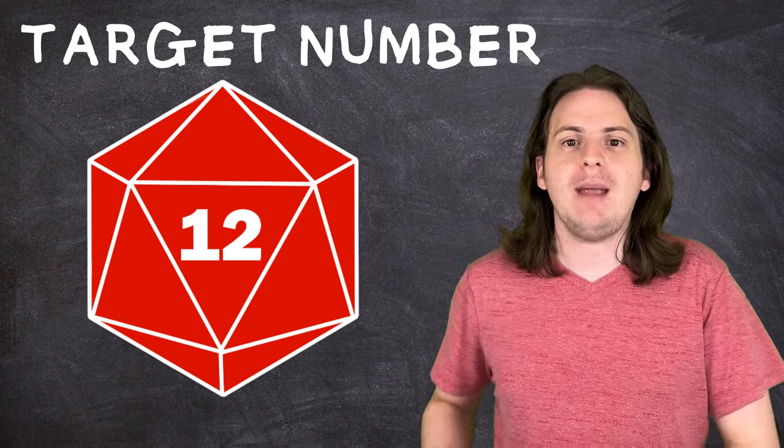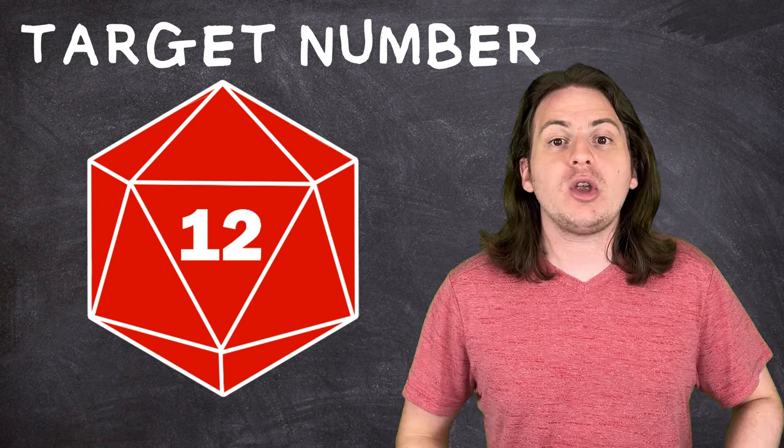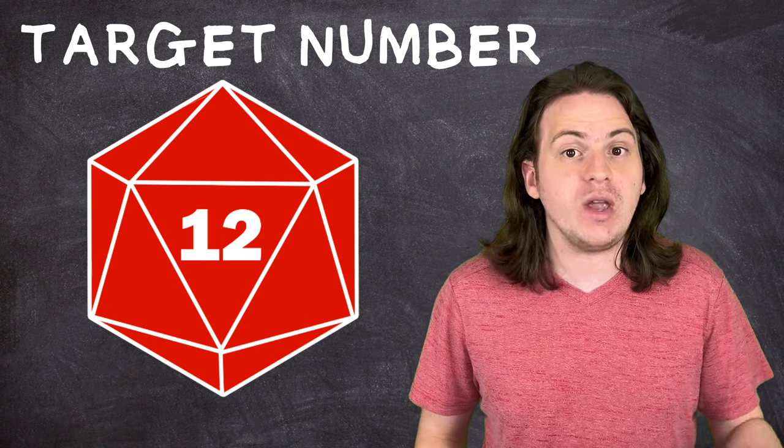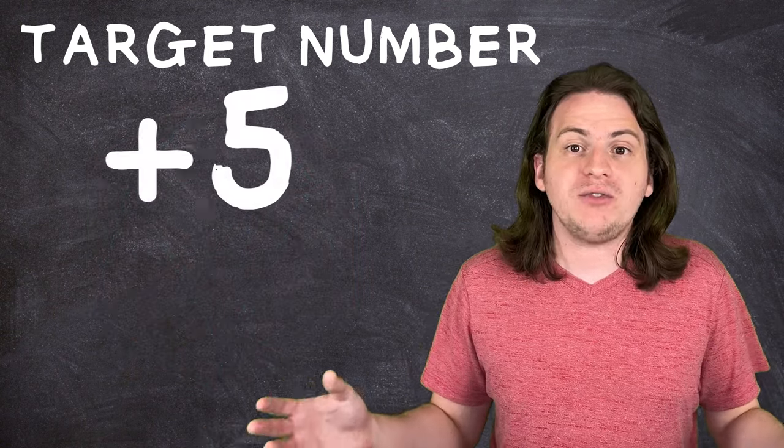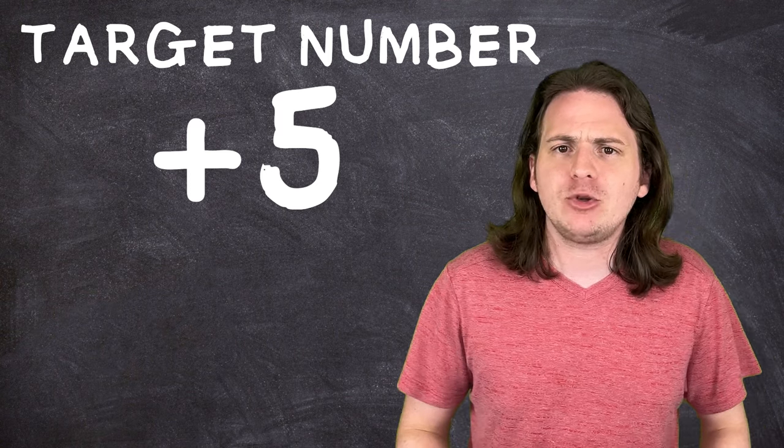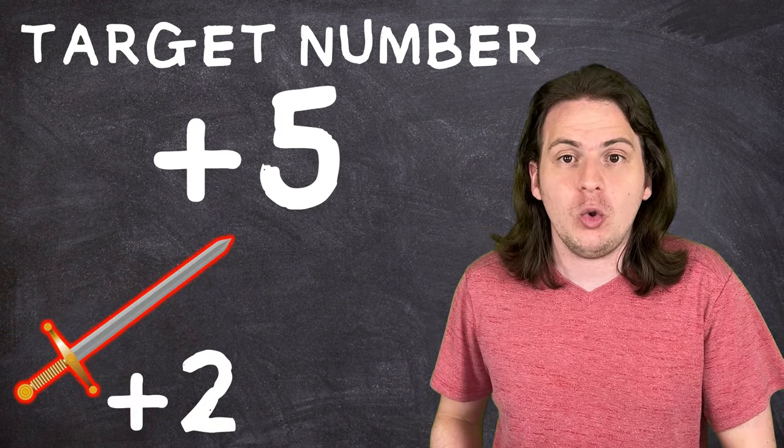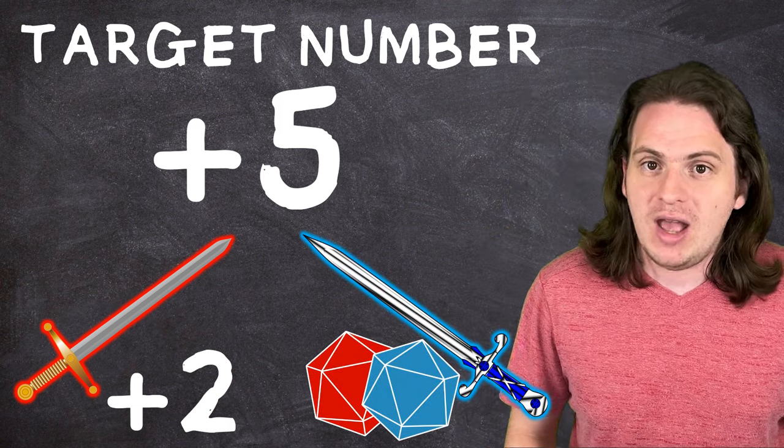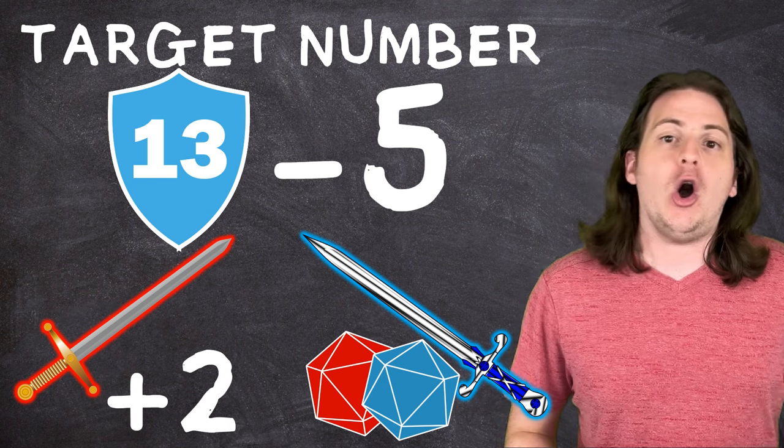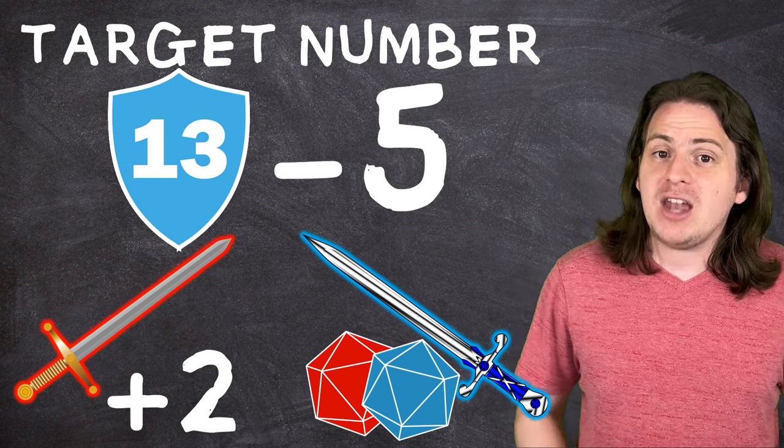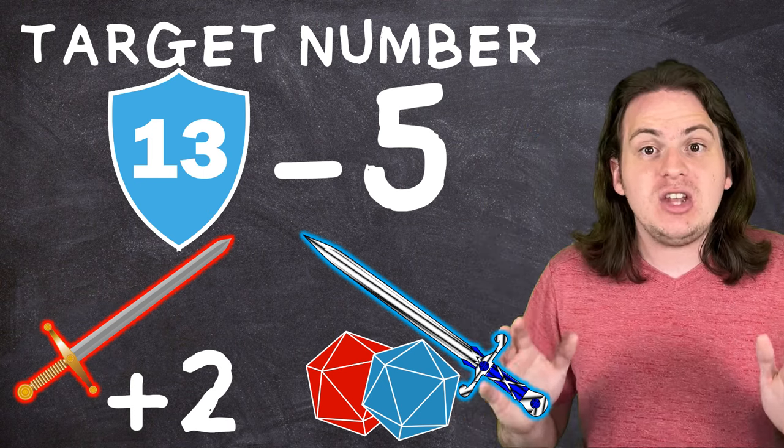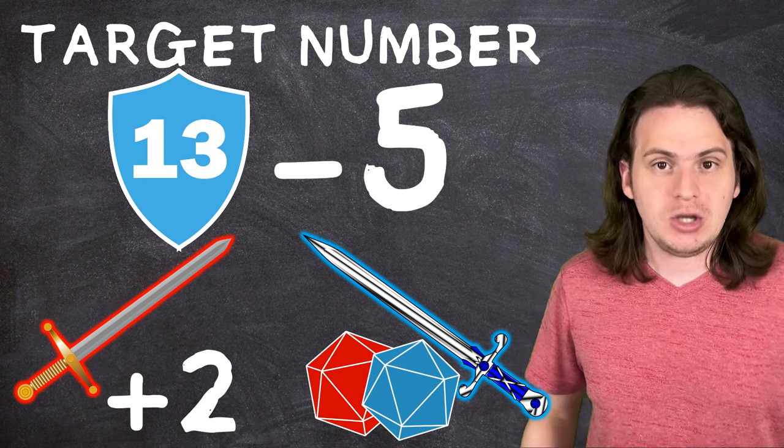So whenever I talk about a target number for the rest of this video, I'm talking about the number that you're trying to hit on the die. And when comparing advantage versus a bonus, I'm really talking about any roll where you could get a bonus on top of what you already have. So you might always have a plus 5 whenever you attack, and you're trying to decide between a sword that will give you another plus 2 or one that will give you advantage. Then we can simply subtract 5 from, say, the armor of the monster you're trying to hit, and that becomes your target number. Then we can just compare advantage to the plus 2. This just makes it a lot easier to compare. Make sense? Cool.